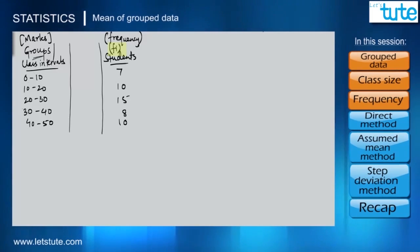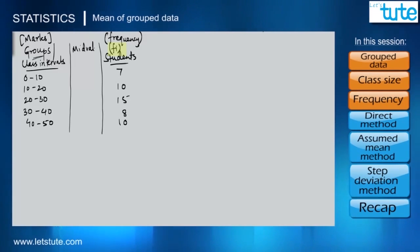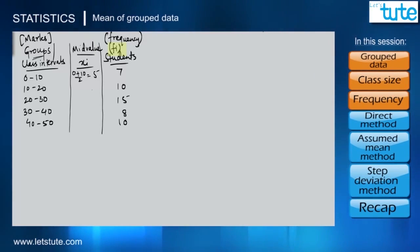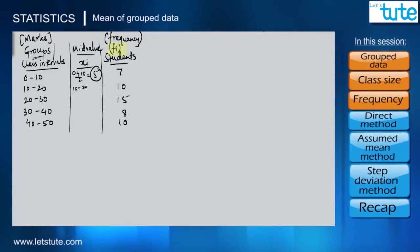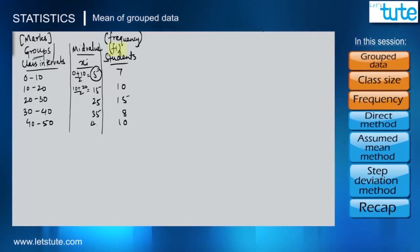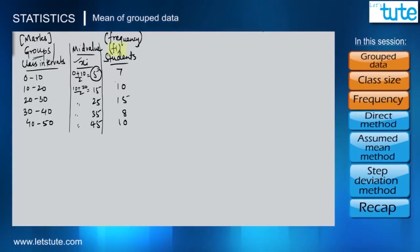Since we don't know the exact values, the mean we find will be an estimate. We cannot work directly with the range, so we take a mid value from each class, calling them xi. We take the average of the class limits: 0 plus 10 divided by 2 gives 5, then 10 plus 20 divided by 2 gives 15, and similarly we get 25, 35, and 45. We must work with these mid values when dealing with grouped data.